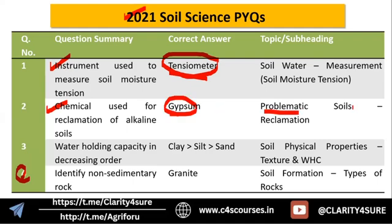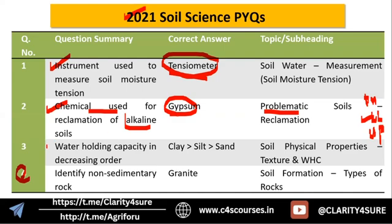The next question was on the chemical used for reclamation of alkaline soil — the answer is gypsum. Problematic soil is an important part of the syllabus. We have a chart of saline soil, saline alkali, and alkaline soil for pH, EC, and ESP. You need to understand all the values of these three parameters. They can ask directly: what is the EC for saline soil, or what is the EC for saline alkali soil.